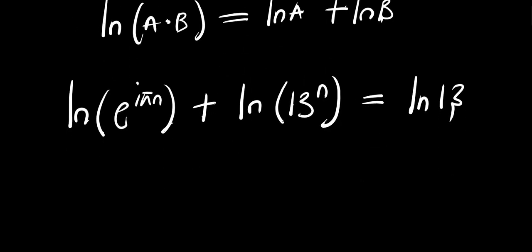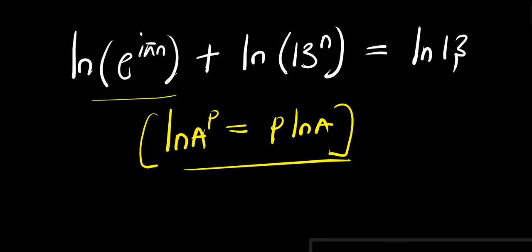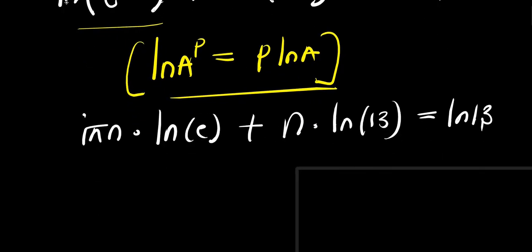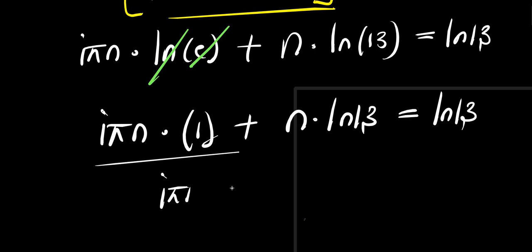Remember, if you have natural log of a to the power b, this equals b times natural log a. Applying that property here, we have i times pi times n times natural log of e, plus n times natural log of 13, equals natural log of 13. Since natural log of e equals 1, we simplify to: i times pi times n, plus n times natural log 13, equals natural log 13.